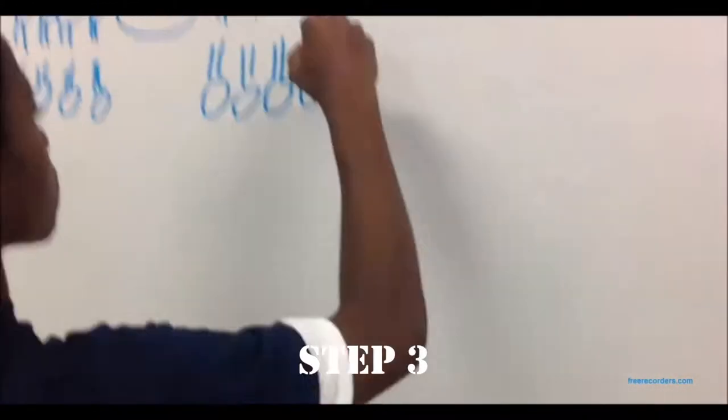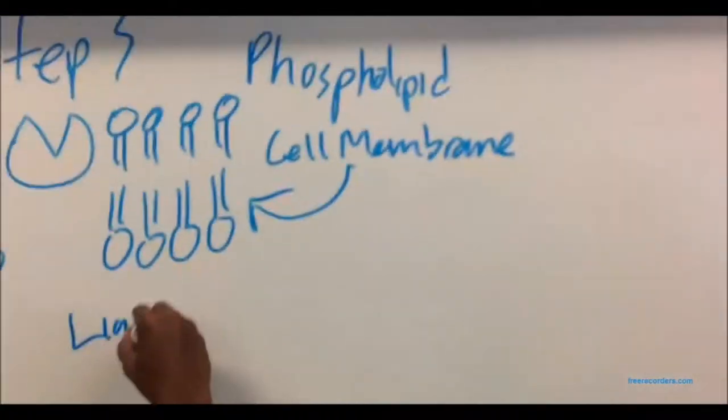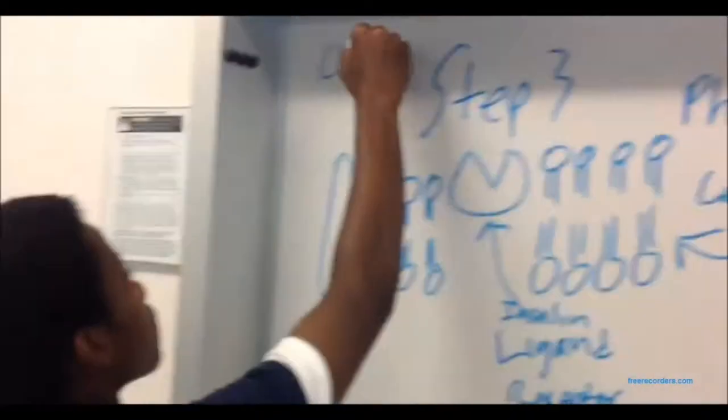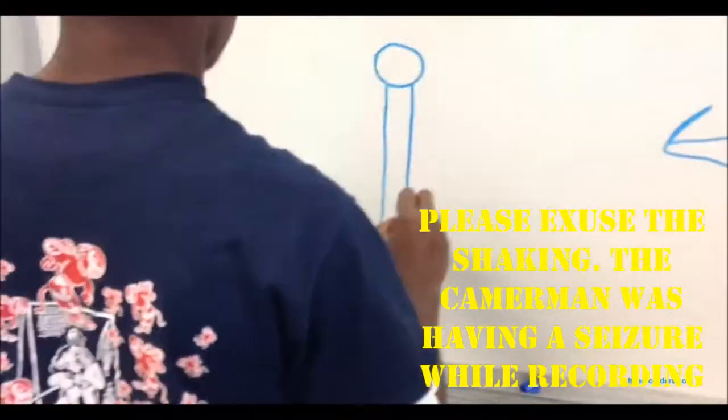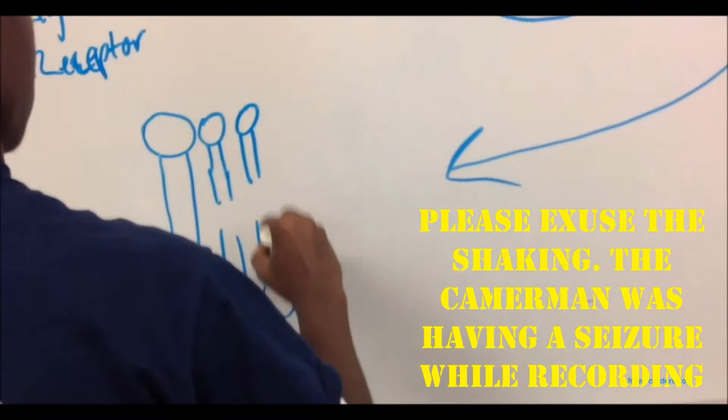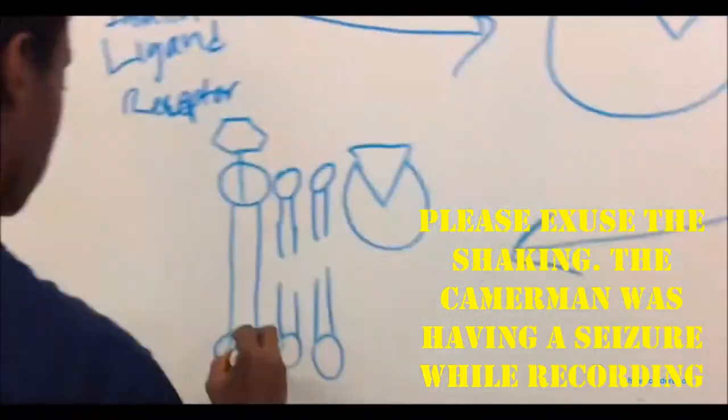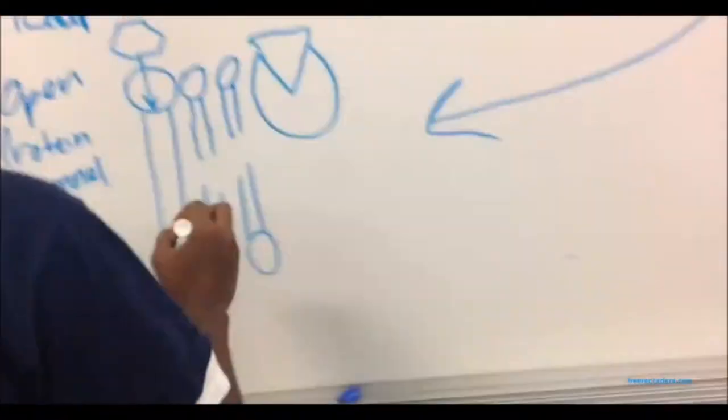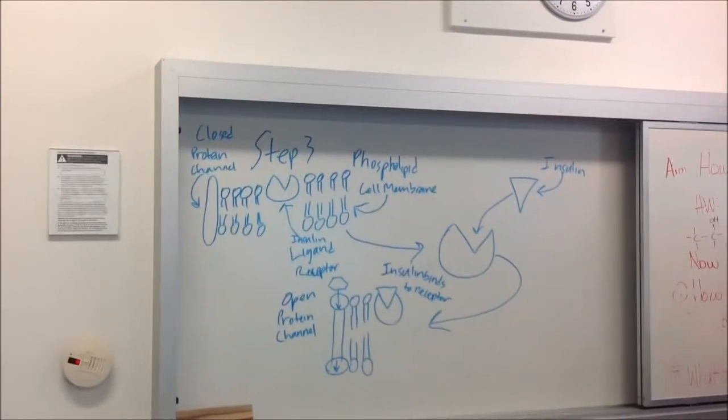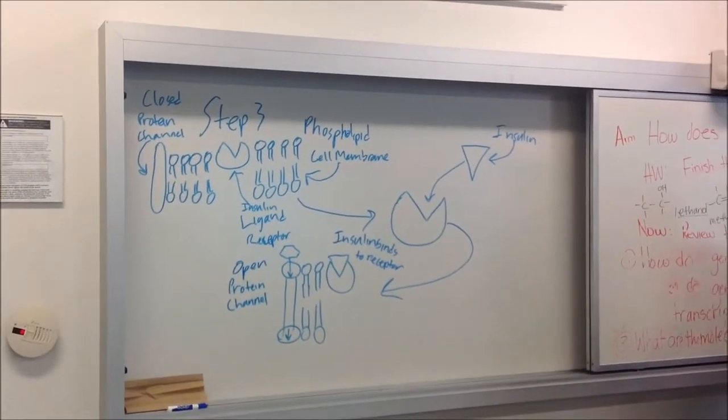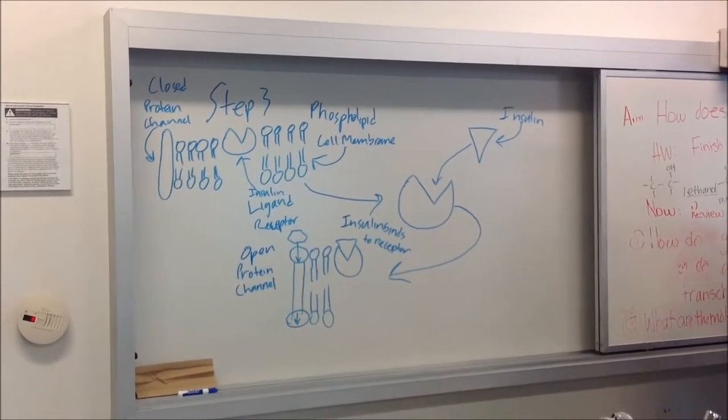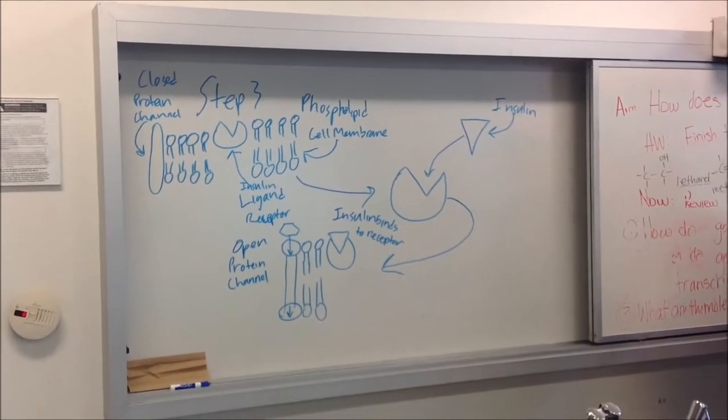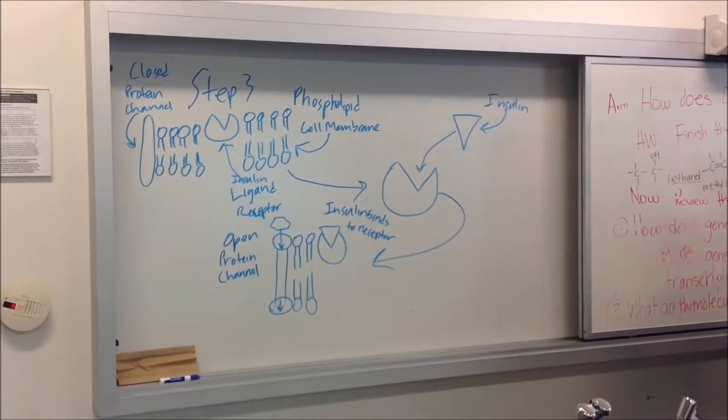Third, glucose is hydrophilic, so it needs a protein channel to get through. You see, insulin binds to the outside of the cell membrane to open up the protein channel. Insulin binds to the ligand receptor embedded into the cell membrane. This in turn opens the protein channel and glucose is able to enter the cell to convert glycolysis in the cytosol.